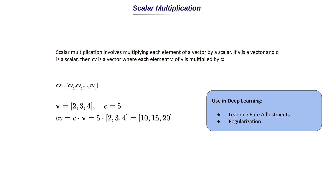Now let's understand how scalar multiplication is used in deep learning. The first application is learning rate adjustment. During the training process of a neural network, the updates to the weights of the model are scaled by a learning rate — typically 0.001 or 0.01. This learning rate is multiplied with the weight vector to scale those things, and this is how training happens and the weights are updated, helping to stabilize learning and reach optimal convergence.